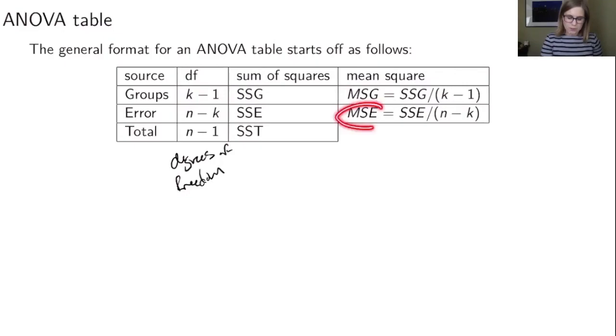And then we have our mean squared error and that's going to be the sums of squares for the error divided by the degrees of freedom for the error and that's the n minus k. We don't end up putting something in this third box, that just gets left empty. So we don't do a mean square for the total. So this is the beginning of the ANOVA table.